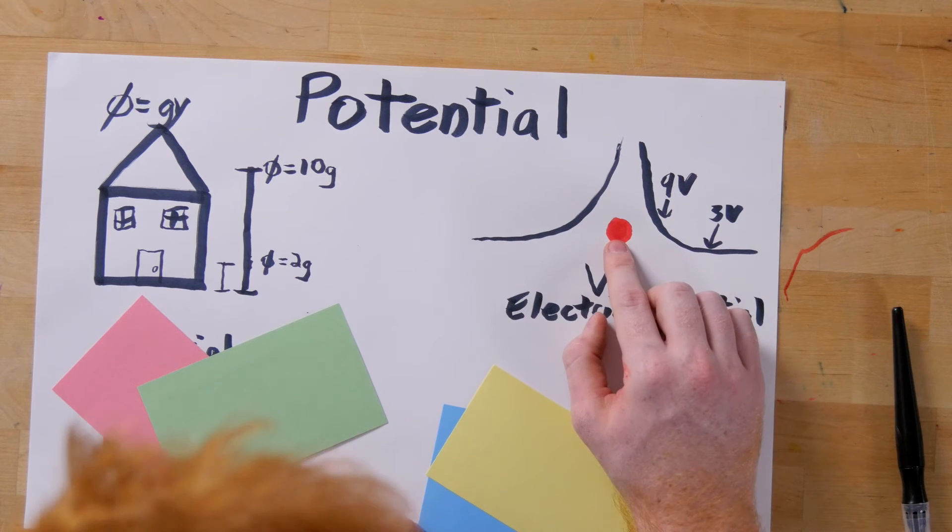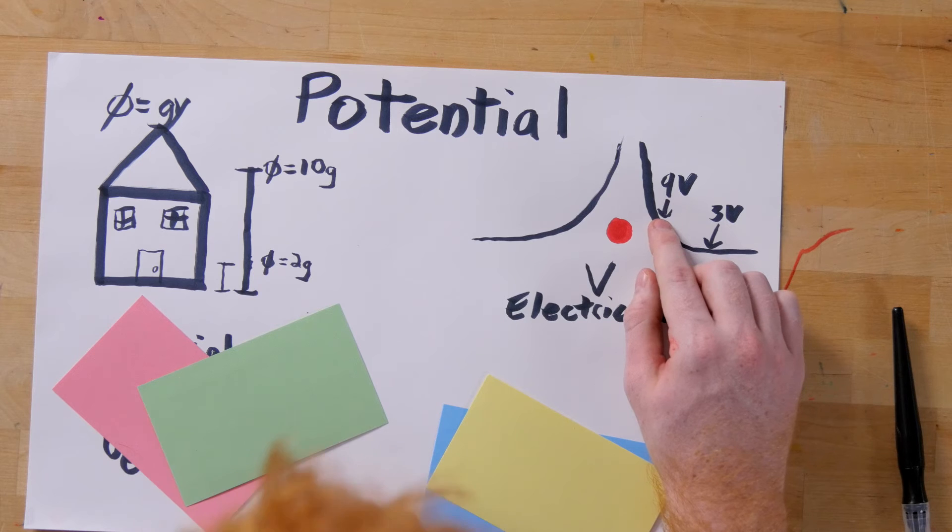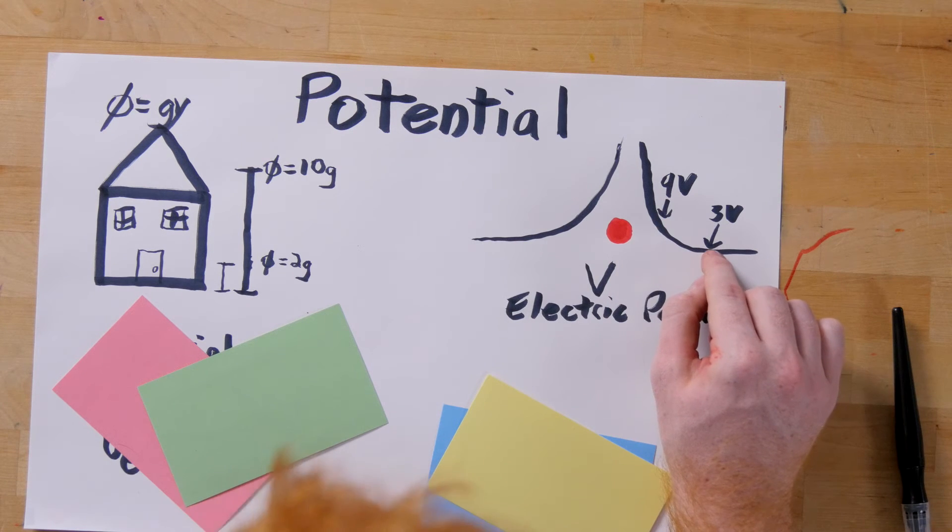For instance, if you have a 1 nanocoulomb positive charged particle and you measure the potential 1 meter away, you get a potential of 9 volts. If you measure the potential 3 meters away, you get a potential of 3 volts.